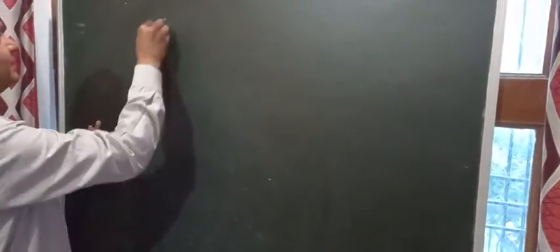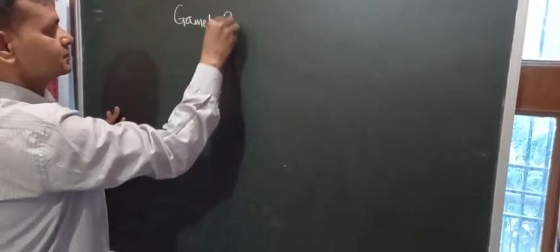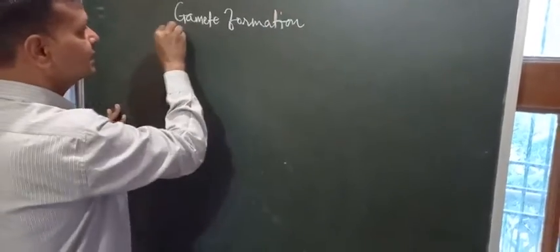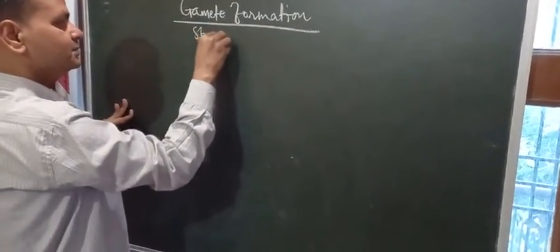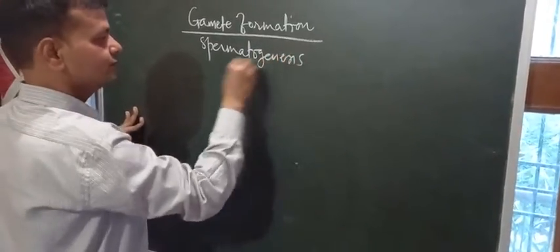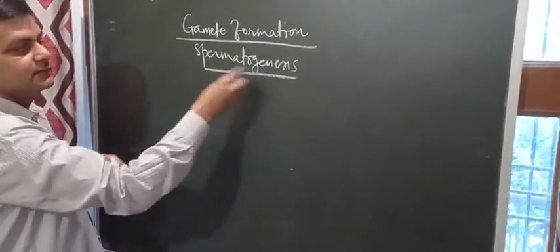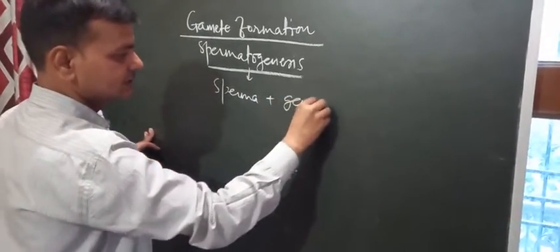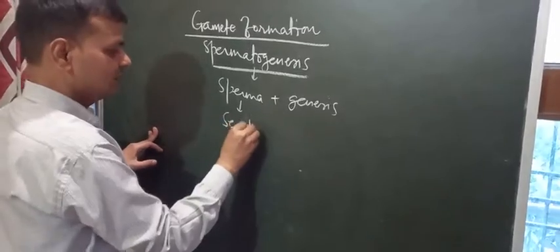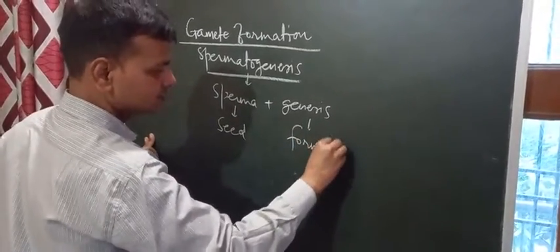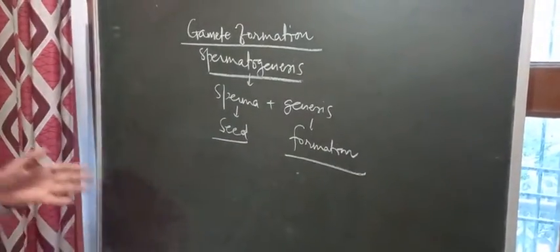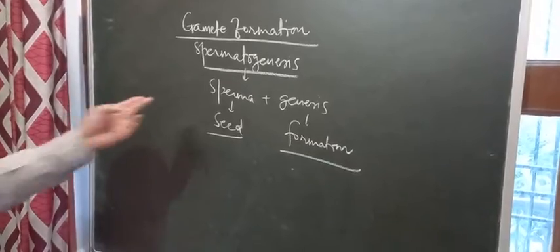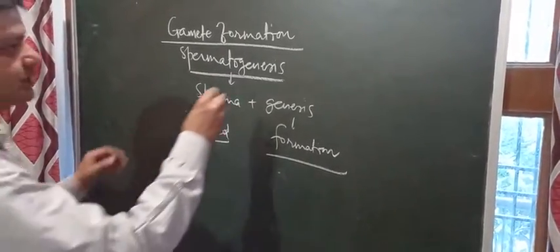Today we will discuss the process of gamete formation in the human male, known as gametogenesis, and specifically spermatogenesis. This word is derived from two words: 'sperma' meaning seed, and 'genesis' meaning the process of formation. So spermatogenesis refers to the process of seed formation.